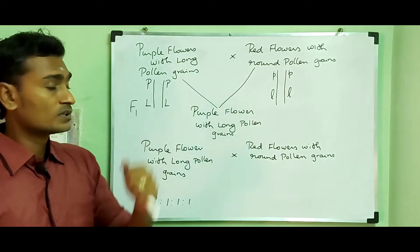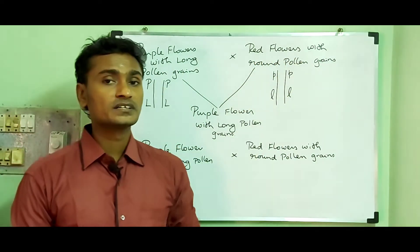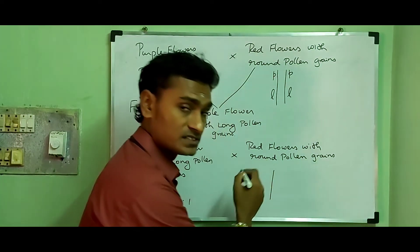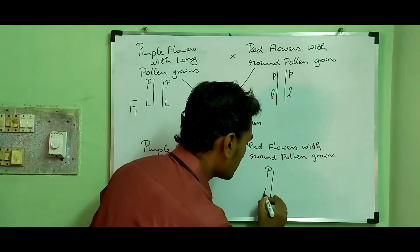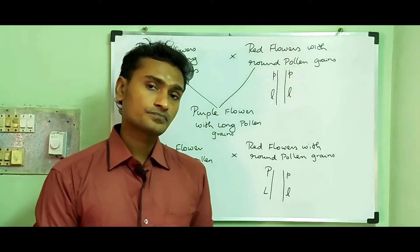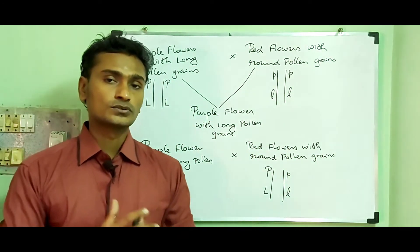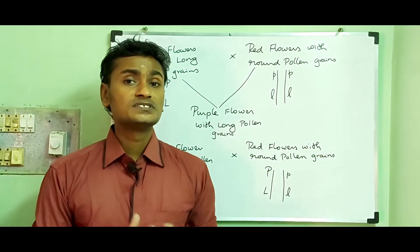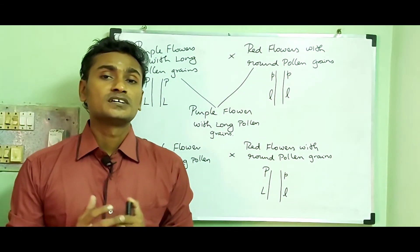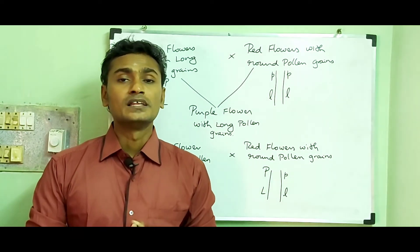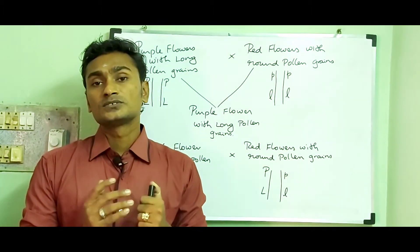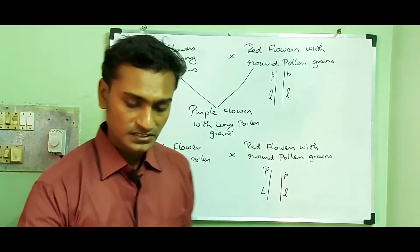They concluded that the genes for purple flower with long pollen grain and the genes for red flower with round pollen grain were located close together on a pair of homologous chromosomes (PL / pl). These genes did not assort independently. This tendency of genes to remain together during chromosome separation is called linkage, and such genes are called linked genes.